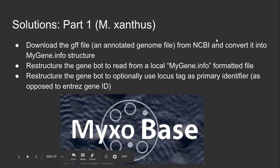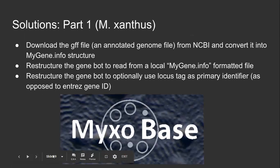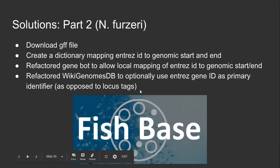The solutions to these problems were similar. For MitsoBase, I extracted the genomic information from NCBI's annotated genome file, converted it into a MyGene.info structured response, and restructured the Genebot to read from the local file instead. For FishBase, I took the annotated genome file, parsed the genomic start and end positions into a hash map by Entrez ID, then forced the Genebot to read the start and end positions from the local mapping instead. Furthermore, I had to restructure WikigenomesDB to use Entrez IDs as the gene product in the URL.